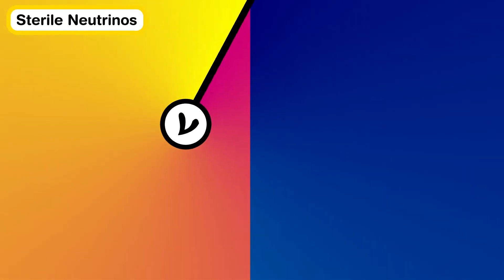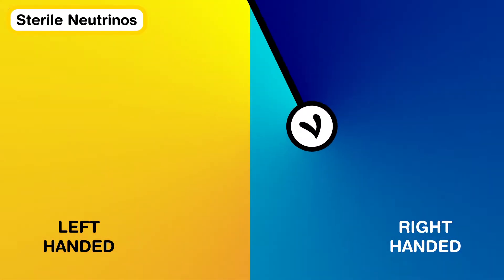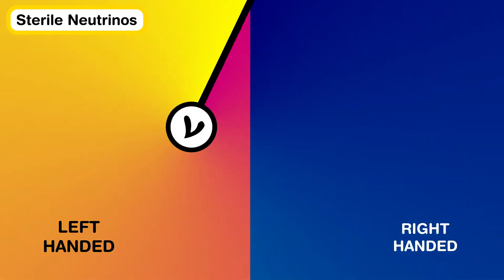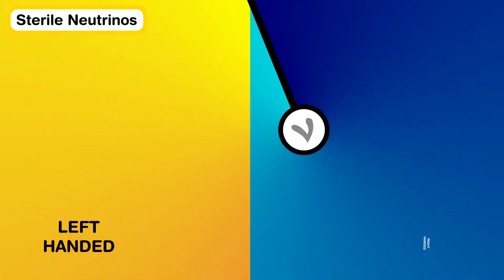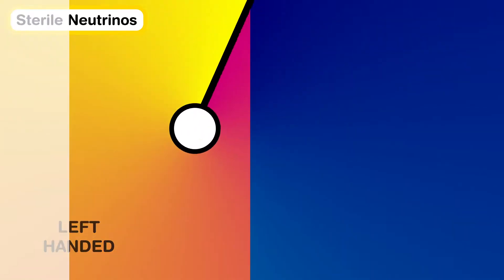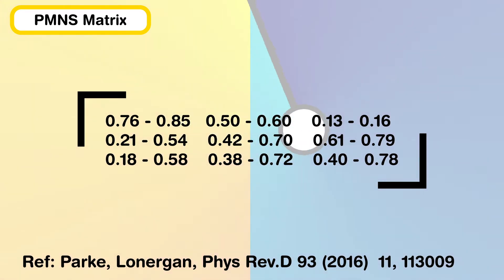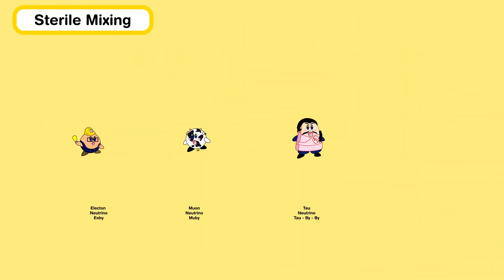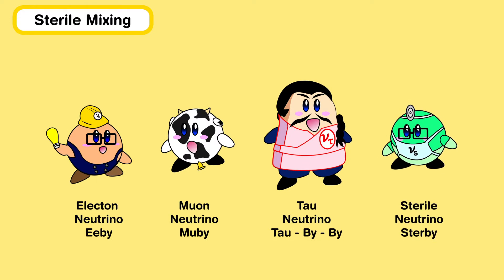To summarise, neutrino oscillations imply that right-handed neutrinos exist, and neutrino mixing with right-handed neutrinos can be probed via the PMS matrix. Currently, there is the possibility that the three-flavour neutrino mixing isn't unitary. One possible way of causing three-flavour non-unitarity is to include an extra sterile state, which is what we focus on here.